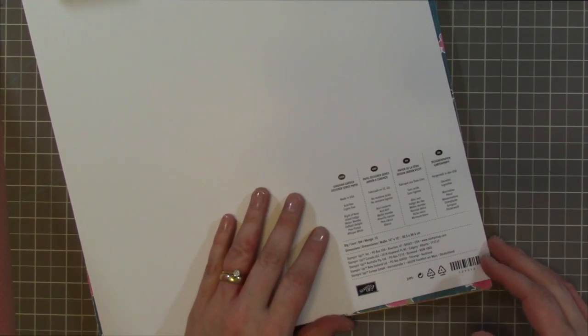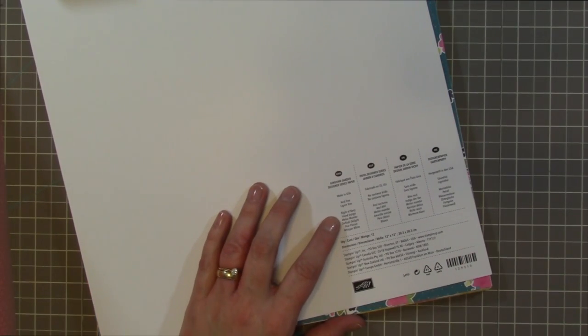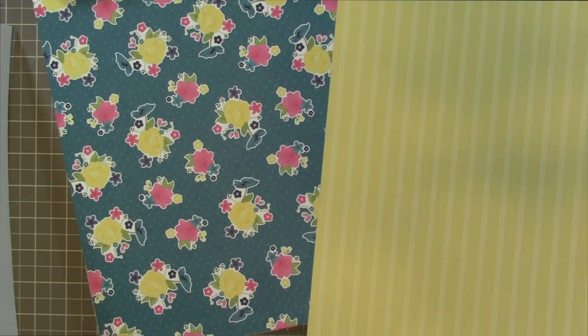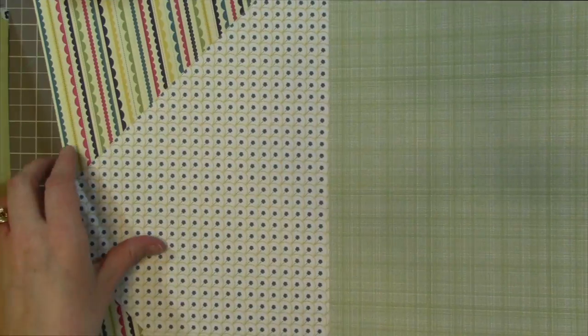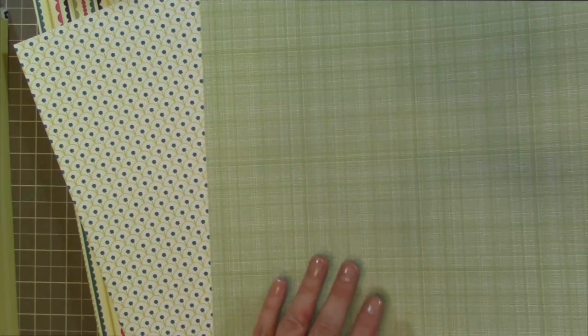The next one is Gingham Garden. Gingham Garden goes with Night of Navy, Island Indigo, Melon Mambo, Daffodil Delight, Pear Pizzazz, and Whisper White. Again, I have these set up for front and back. So I love this color right here, this striped color, and then they have a floral print. We have a green and this little scallop with the flowers in the center.